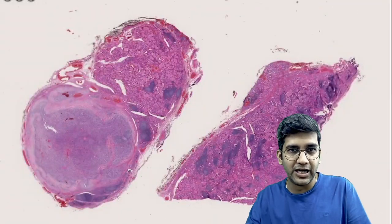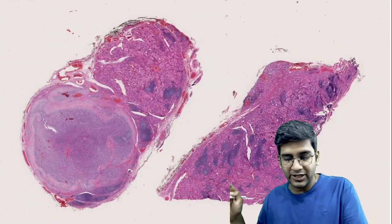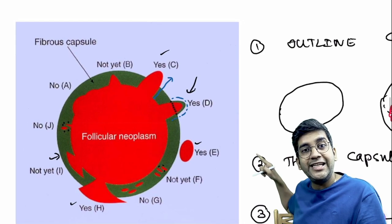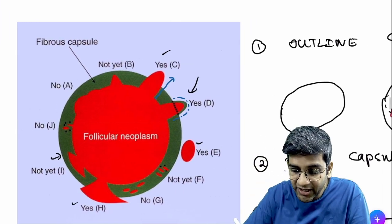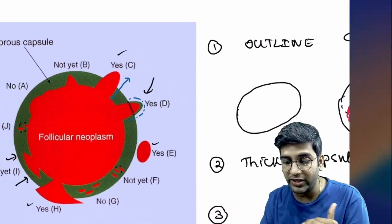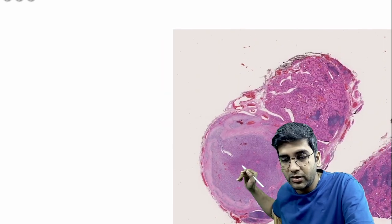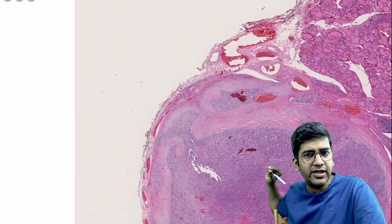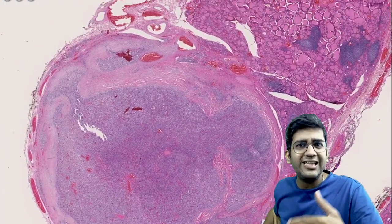These are the take-home points, but outlining the capsule is the most important — if you don't outline, you will make a mistake. Let's look at the first case. At low power, you can already appreciate the capsule. When I outline it, I can ask: is this part outside the line? That is invasion. It is a very thick capsule — it should have joined like this, but instead it is going here — that is the 'D' type of overbounding.